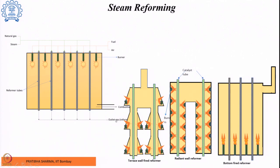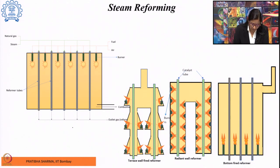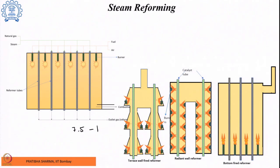If you look at the reformer geometry, it consists of bundles of tubes with length somewhere between 7.5 to 12 meters, a thickness of about 1 to 2 centimeters. These tubes are filled with catalyst along with support and promoters — which catalyst we will see a little later. In these reformer tubes the reaction takes place.